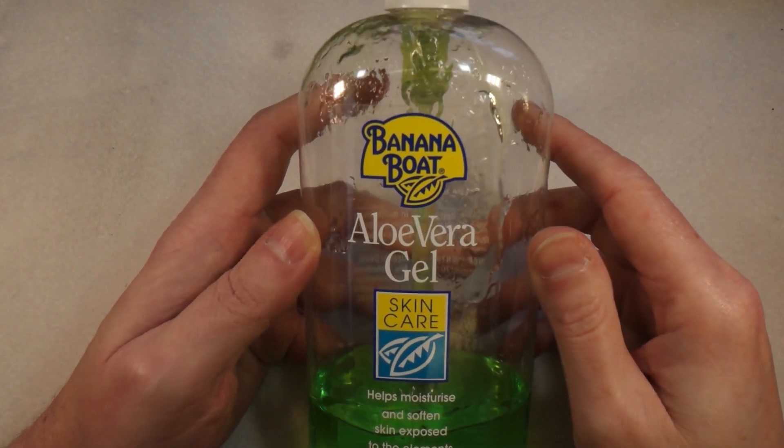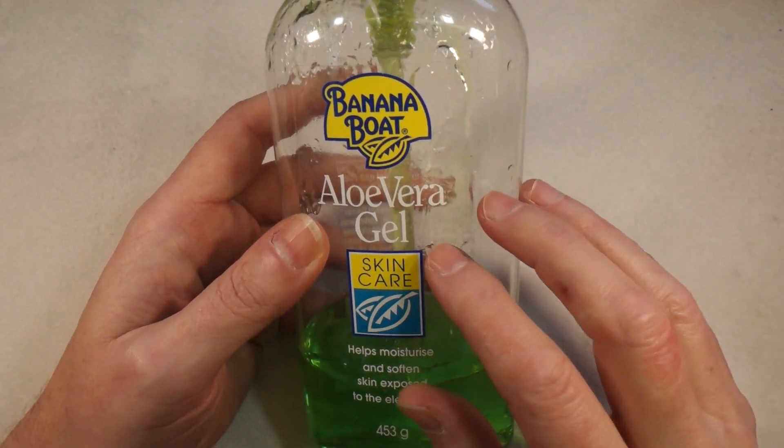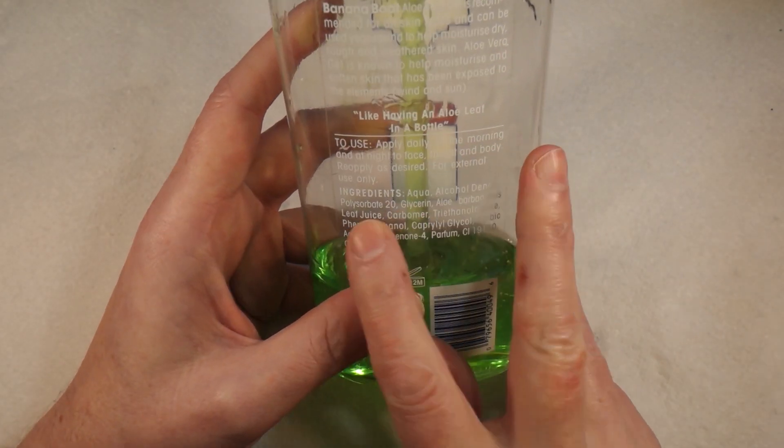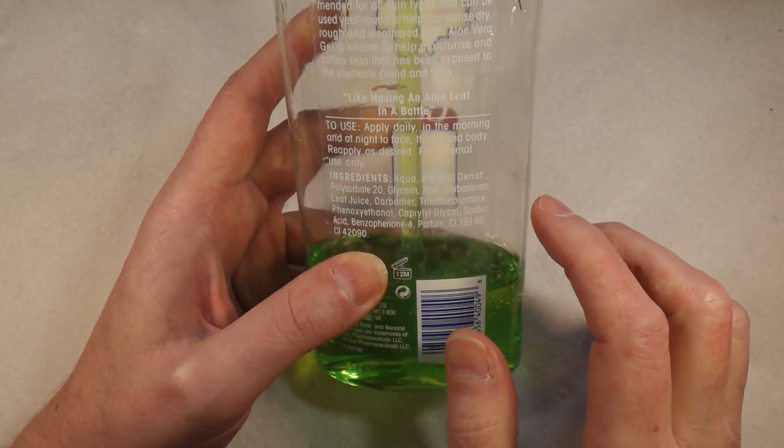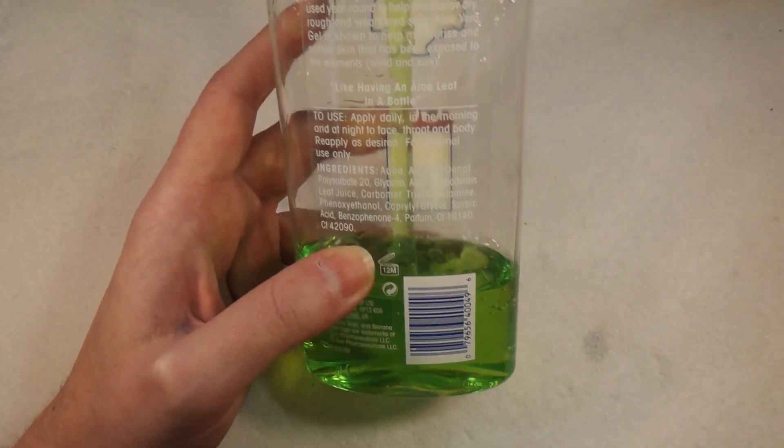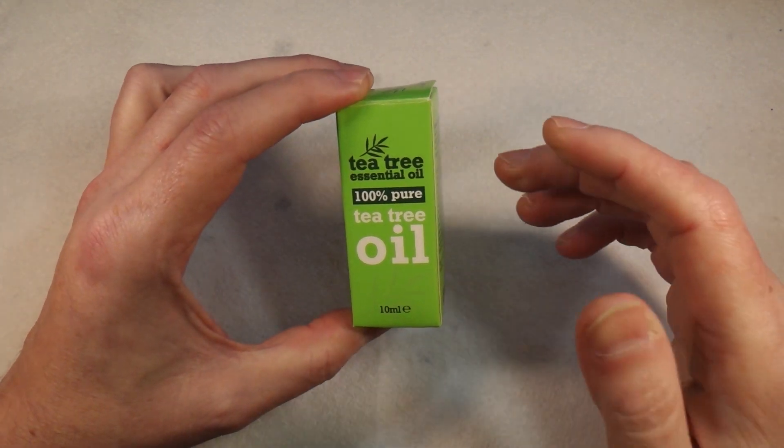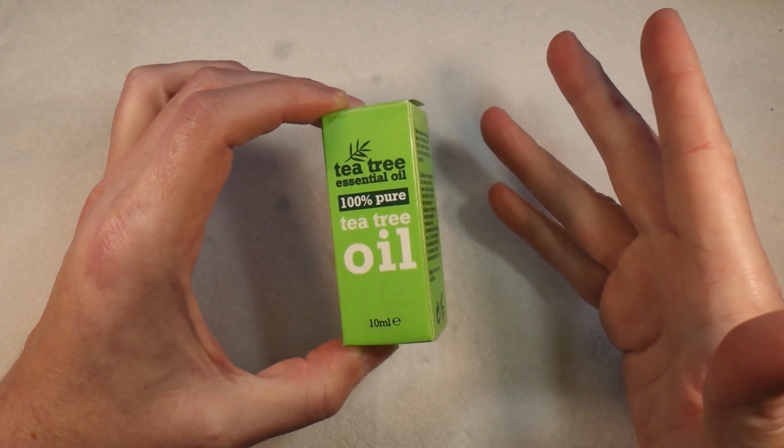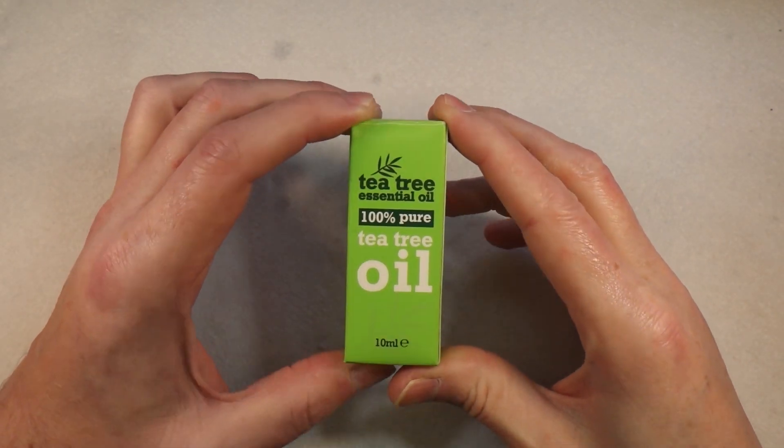We also have one other thing we can use which is this - this is a Banana Boat aloe vera gel. Now this obviously is meant for human use but it's got a lot more stuff in it. It's got water, denatured alcohol, polysorbate 20, glycerin which is a gelling agent, the aloe vera and various other bits and pieces in there as well. It doesn't matter, it will still work just as well. And then one other thing that we can put in there is tea tree oil. This is basically there because the alcohol as you well know is very pungent, it has a very strong smell, so this basically just hides that smell.